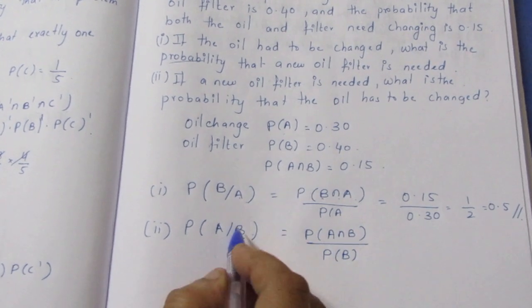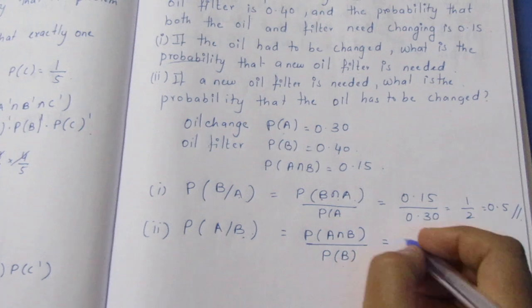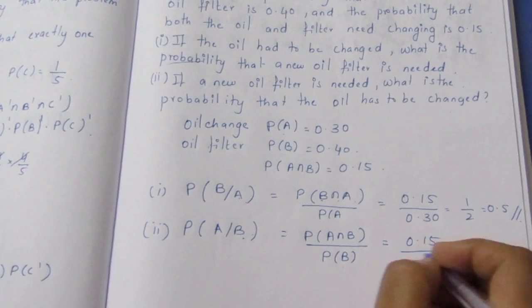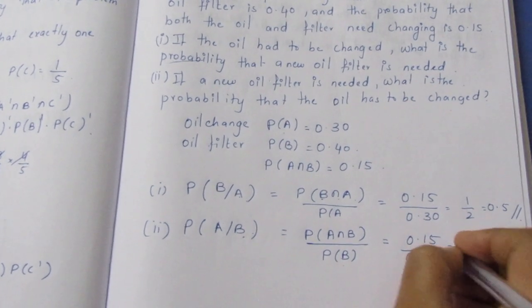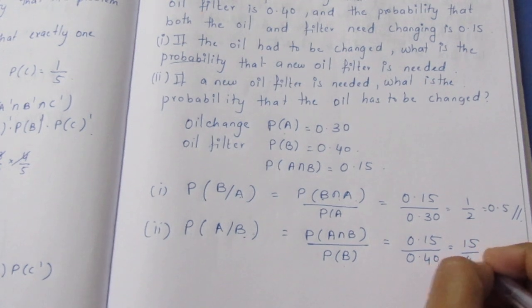The denominator is now B, which is 0.40. So we have 0.15 divided by 0.40, which is 15 by 40.